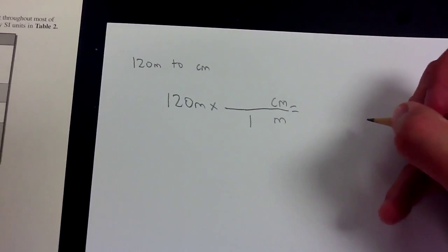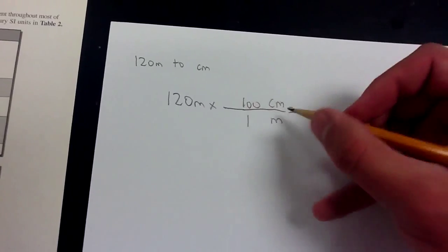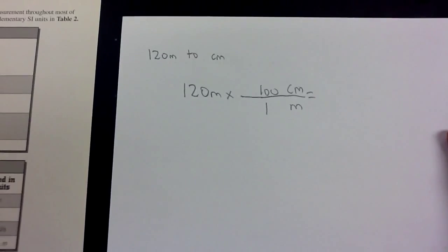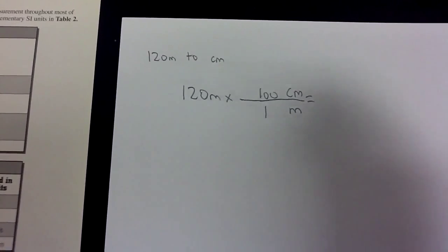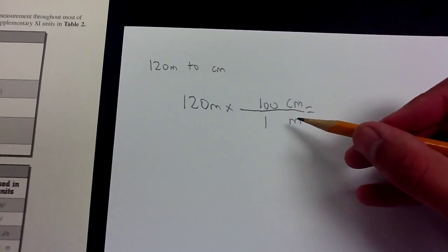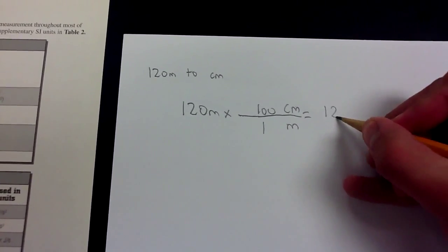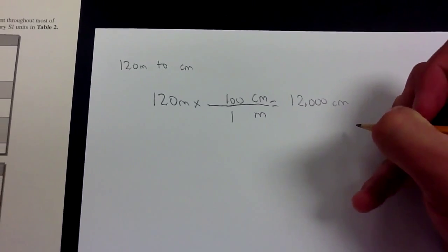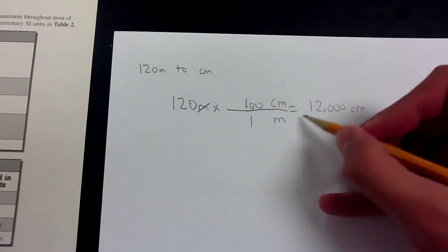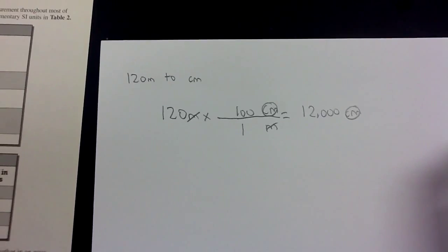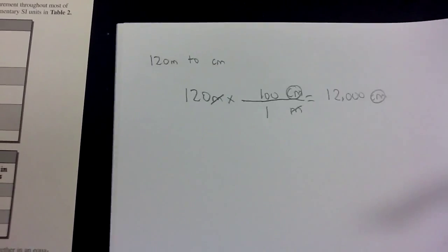So we put that in: 1 meter is 100 centimeters. I put 1 for the meter and 100 for the centimeter because those are the units. Now we do the math: 120 times 100 divided by 1 gives us 12,000 centimeters. The meters cancel and all we're left with is centimeters, so we know that's the right answer. And if those were easy, I have a challenge for you.